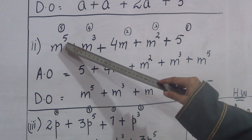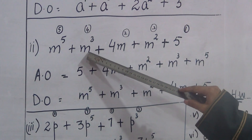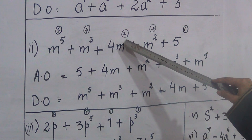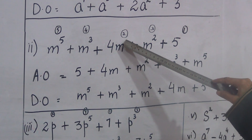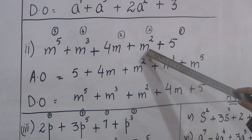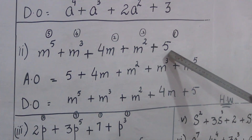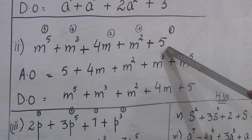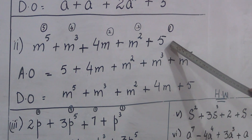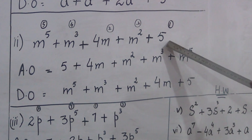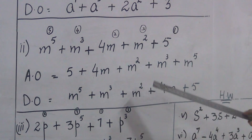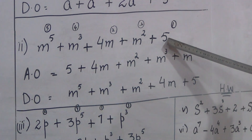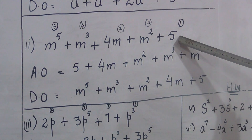This is the first term where the power is 5. The second term has power 3. Then here the power is 1, because the power doesn't appear — there is a hidden 1. For ascending order, the term where m has no visible power, m's power is zero.